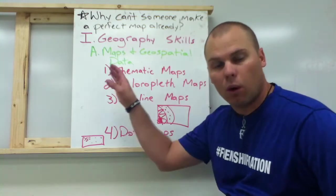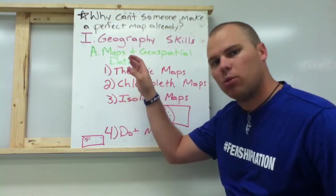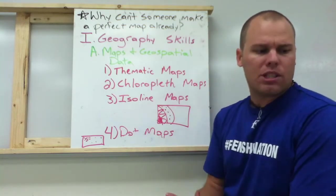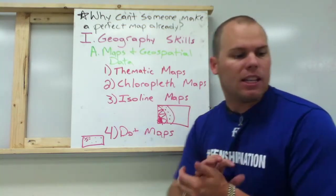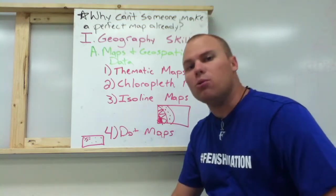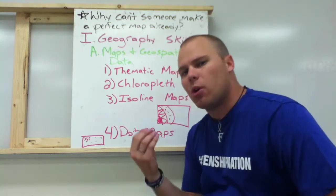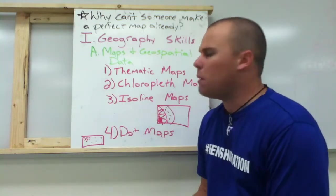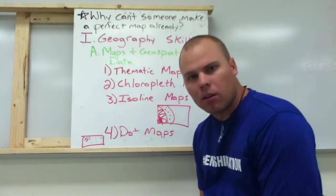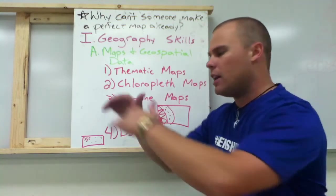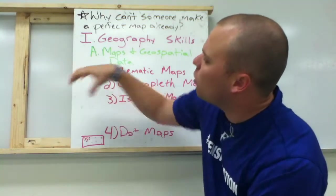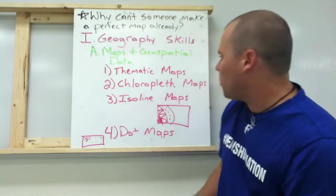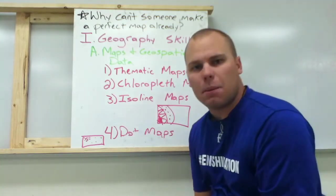The first subset we're going to look at is maps and geospatial data — how things are arranged. The first type of maps are thematic maps, and these maps show the distribution, the flow, different things about an area. An easy way to remember that is these maps have a theme. Maybe the theme is robberies and it's showing you a map of the city and where most of the robberies are occurring — that thematic map is one about robberies.